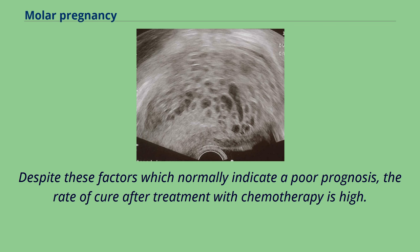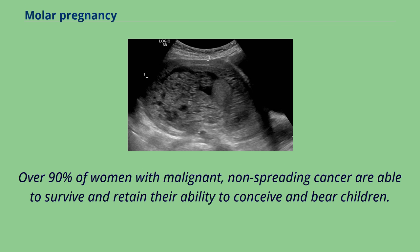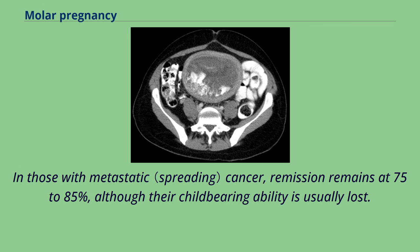Despite these factors which normally indicate a poor prognosis, the rate of cure after treatment with chemotherapy is high. Over 90% of women with malignant, non-spreading cancer are able to survive and retain their ability to conceive and bear children. In those with metastatic cancer, remission remains at 75-85%, although their child-bearing ability is usually lost.